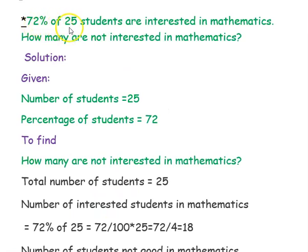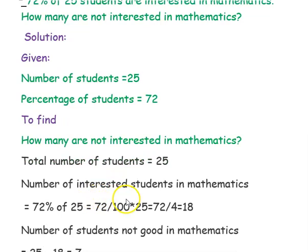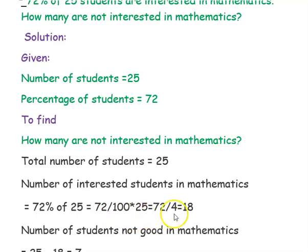The next example: 72 percentage of 25 students are interested in mathematics. What is given — the number of students is 25 and the percentage of students interested is 72. We want to find how many students are interested. The number of students who are interested in mathematics is 72 percentage of 25. We can write percentage as 1 divided by 100, so this becomes 72 divided by 100, multiplied by 25.